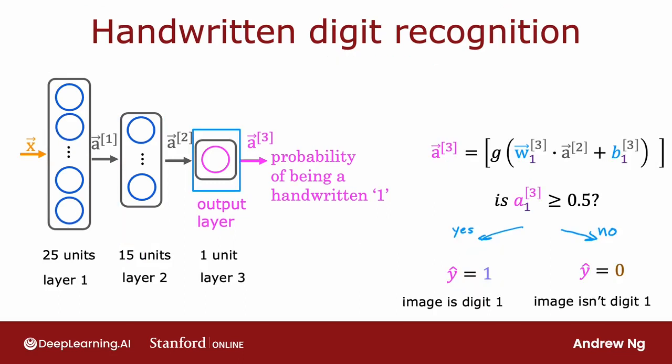The final step is then to compute a3. And we do so using a very similar computation, only now this third layer, the output layer, has just one unit, which is why there's just one output here. So a3 is just a scalar. And finally, you can optionally take a3 subscript 1 and threshold it at 0.5 to come up with a binary classification label. Is this the digit 1? Yes or no.